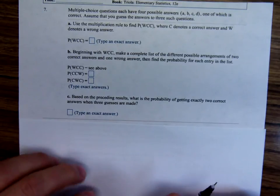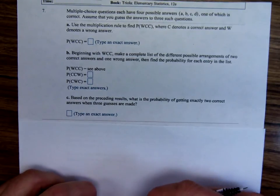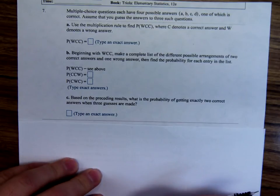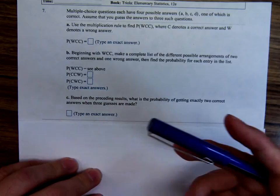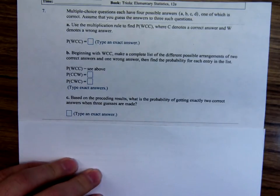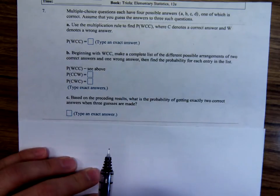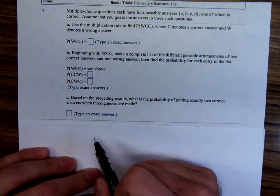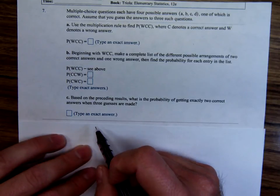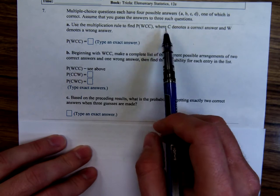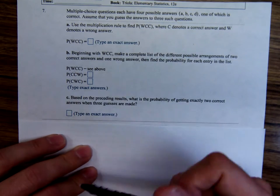Okay, Anthony Priscilla here doing some probability with my statistics course. Multiple choice questions each have four possible answers, one of which is correct. So A, B, C, D, only one right answer. Assume that you guessed the answers to three such questions. Use the multiplication rule to find the probability of wrong, W, C, C, this is where C stands for correct and W stands for wrong.